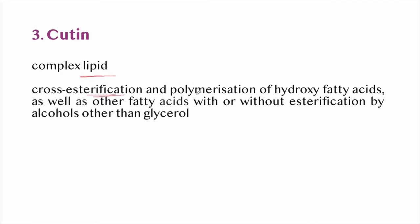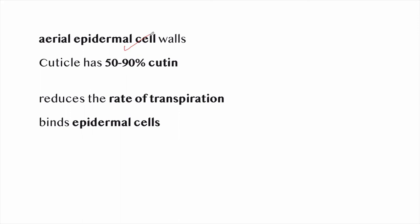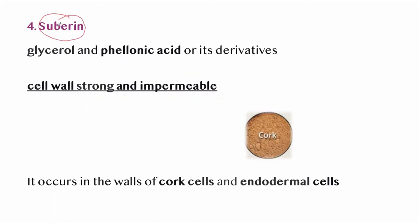Cutin is a complex lipid produced by cross-esterification and polymerization of hydroxy fatty acids as well as other fatty acids, with or without esterification by alcohols other than glycerol. Cutin occurs in the aerial epidermal cell walls as well as a separate layer of cuticle on the outside of the epidermal cell; the cuticle has 50 to 90 percent cutin. Cutin reduces the rate of transpiration and binds epidermal cells. Suberine is a mixture of fatty material consisting of condensation products of glycerol and phellonic acid; it makes the cell wall strong and impermeable and occurs in the walls of cork cells and endodermal cells.